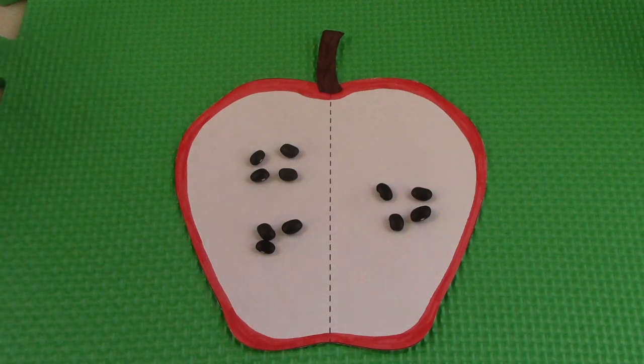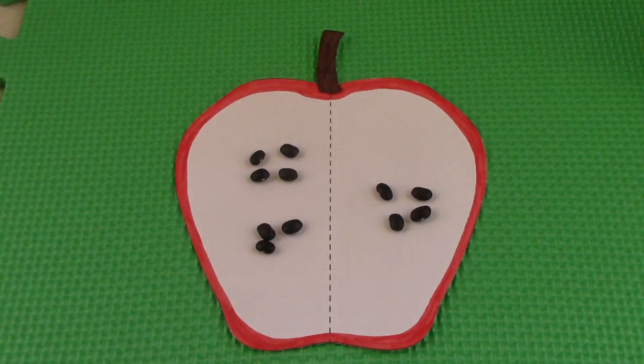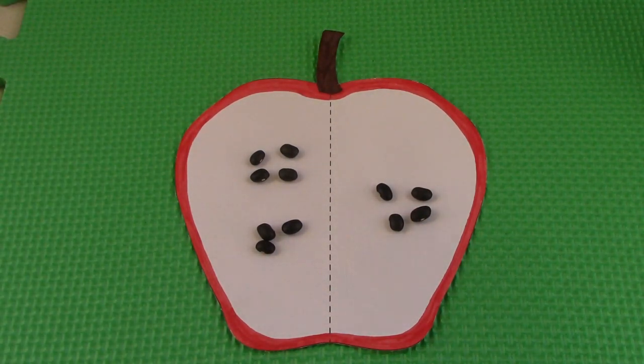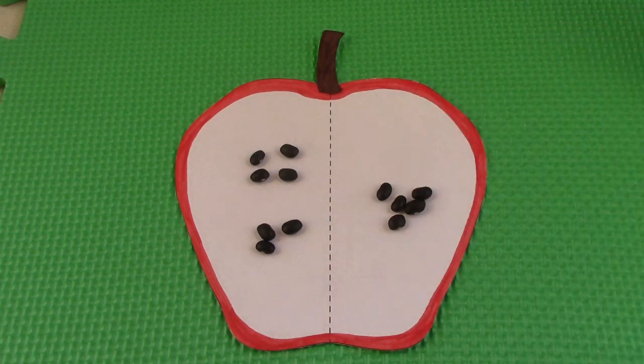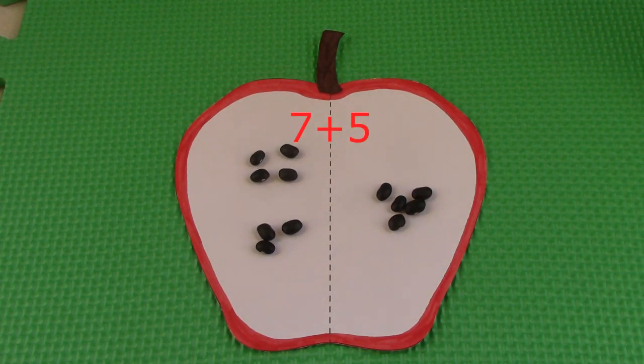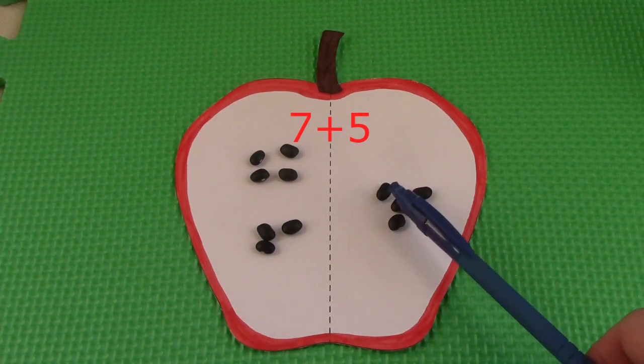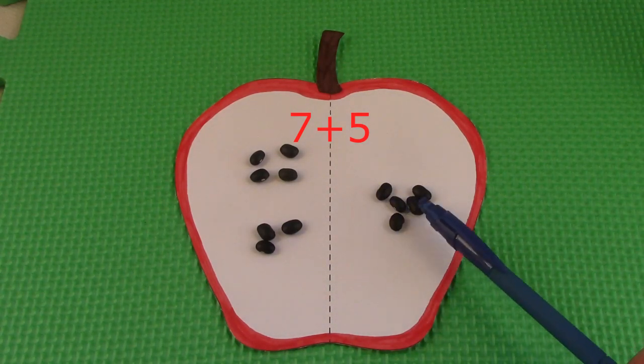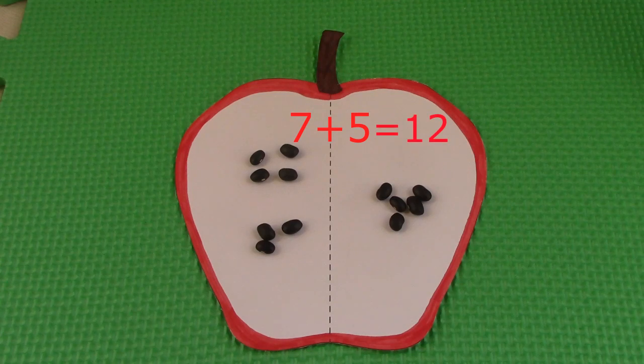The next fact that we're going to look at is 7 plus 5. Let's add on as we count. We have 7, 8, 9, 10, 11, 12. 7 plus 5 is 12.